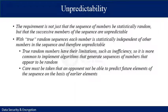In applications such as reciprocal authentication, session key generation, and stream ciphers, the requirement is not just that the sequence of numbers be statistically random, but that successive members of the sequence are also unpredictable. True random number sequences are statistically independent and therefore unpredictable, but have limitations such as inefficiency. It is more common to implement algorithms that generate sequences appearing to be random, with care taken that an opponent cannot predict future elements.